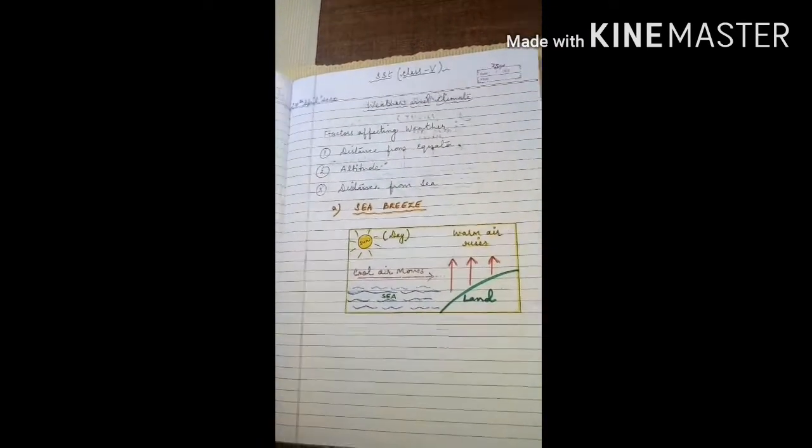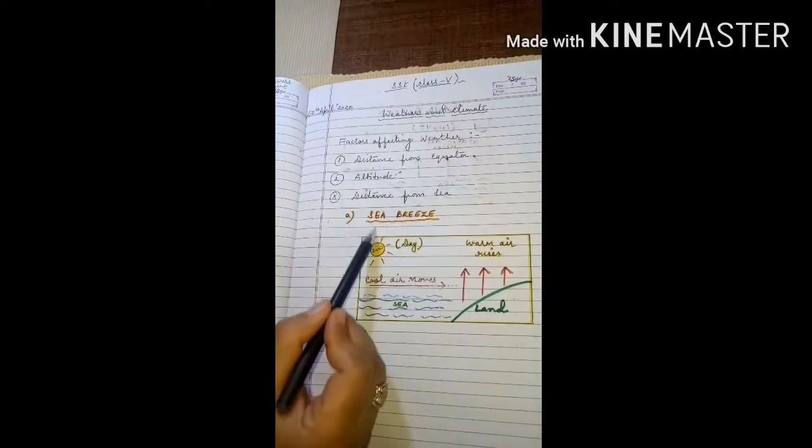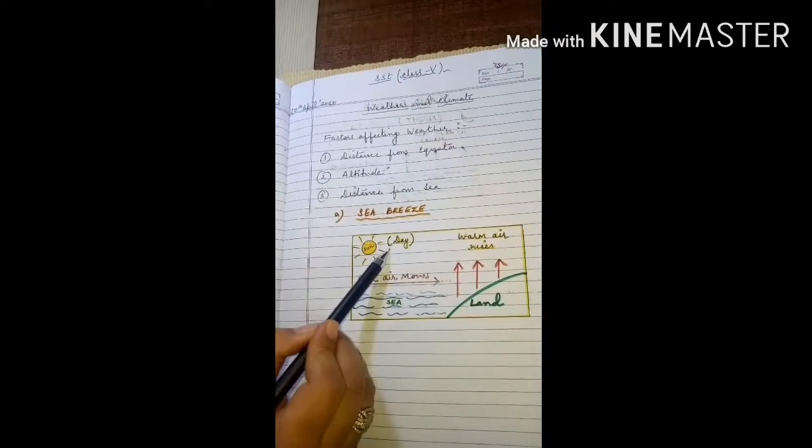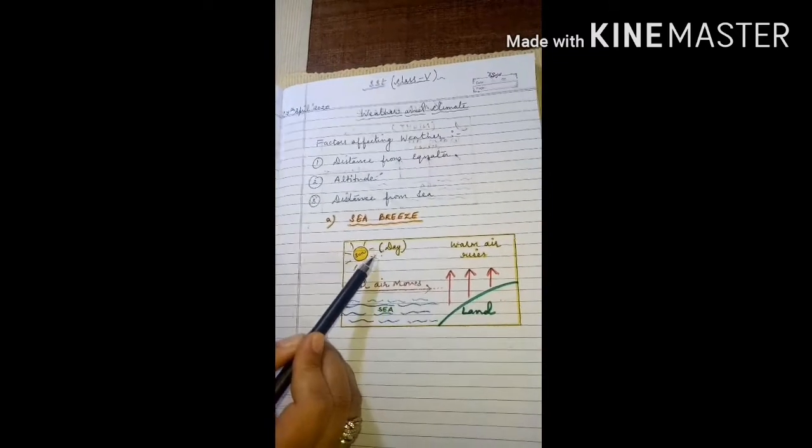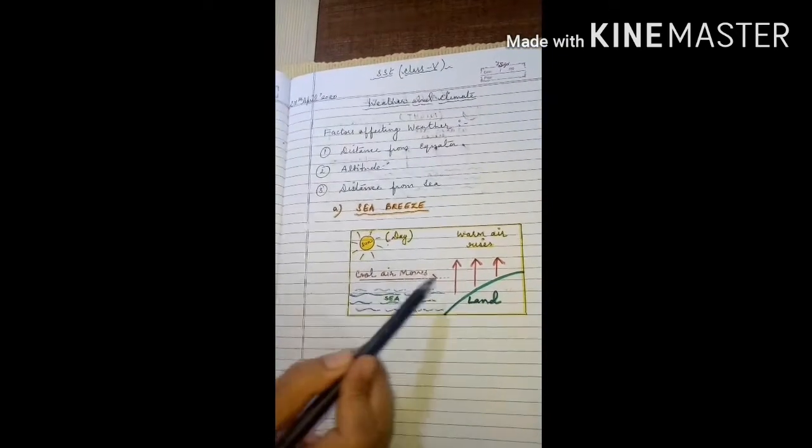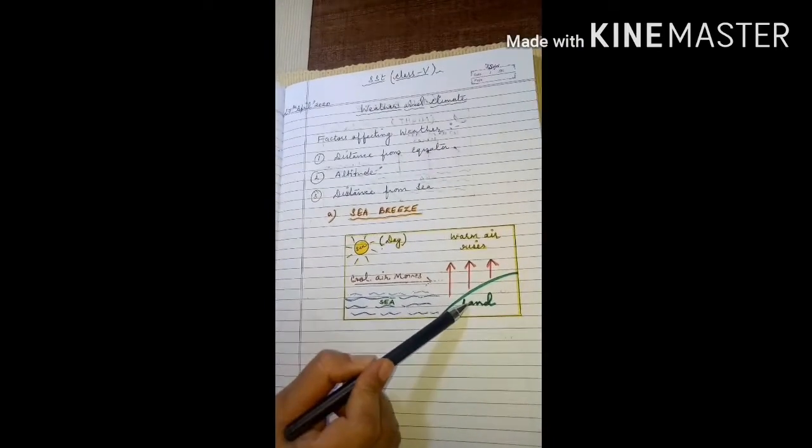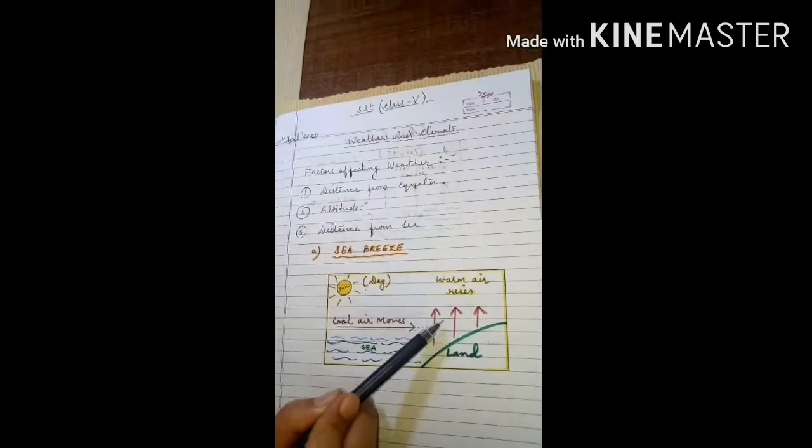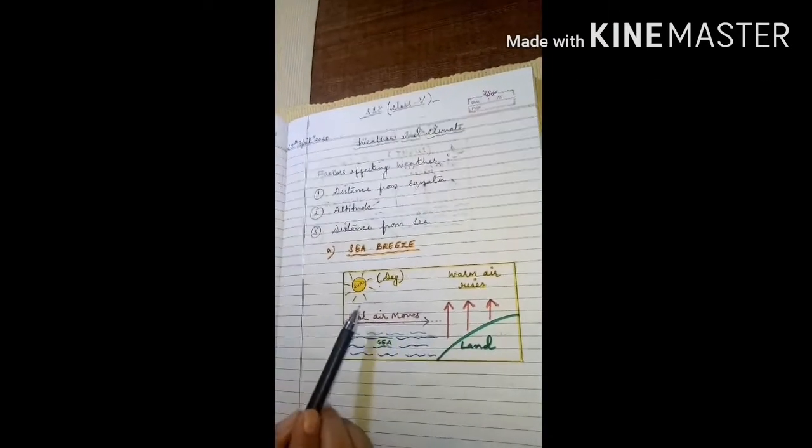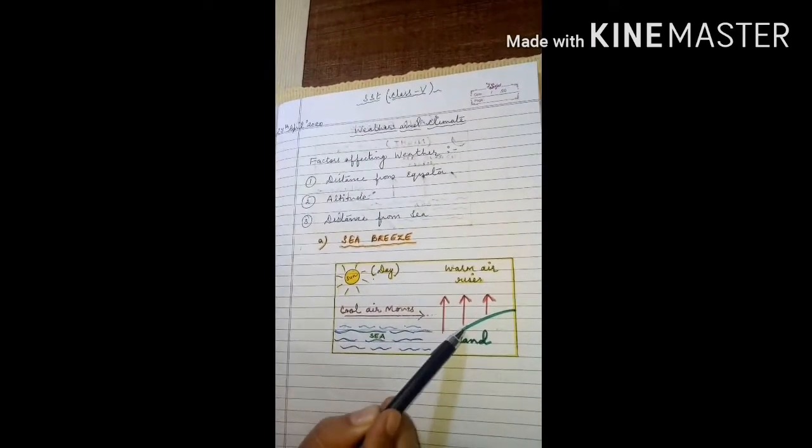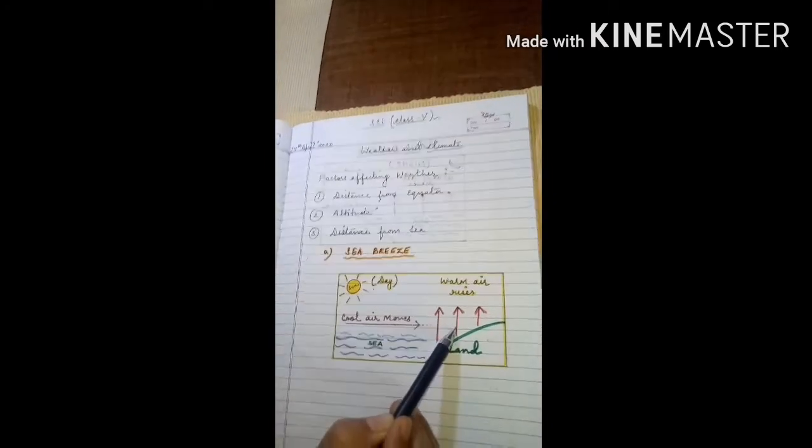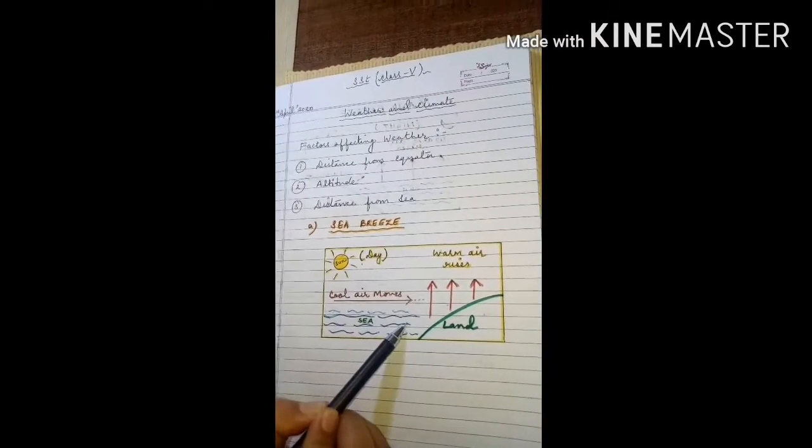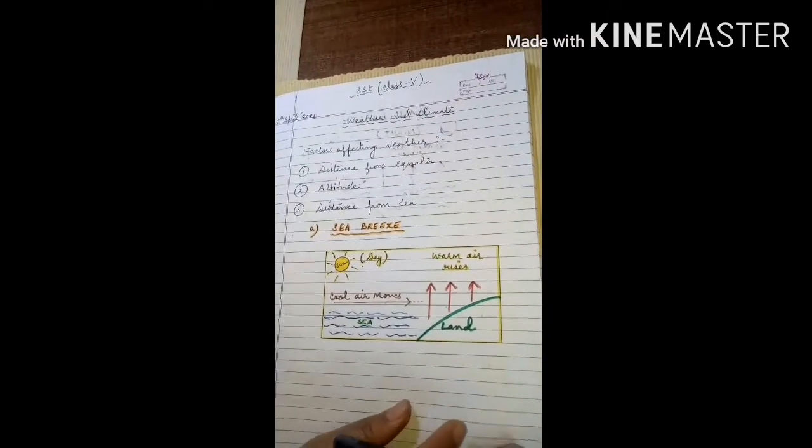This is the diagram of sea breeze. It takes place during the day time. The sun heats both land and water. But land absorbs more heat than water. Therefore, the warm air above the land rises and the cool air from the sea takes its place. This cool air moves from the sea towards the land. And this phenomena is known as sea breeze. So it balances the temperature.